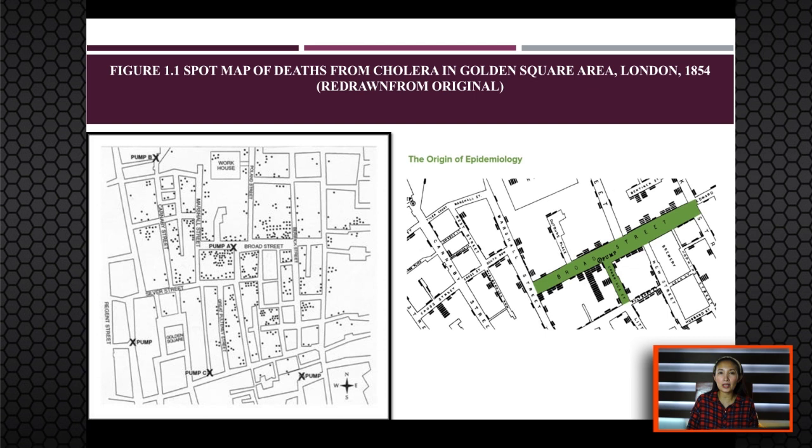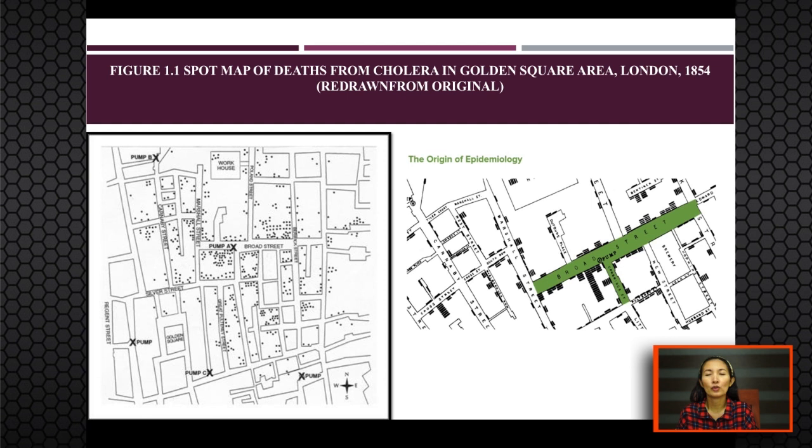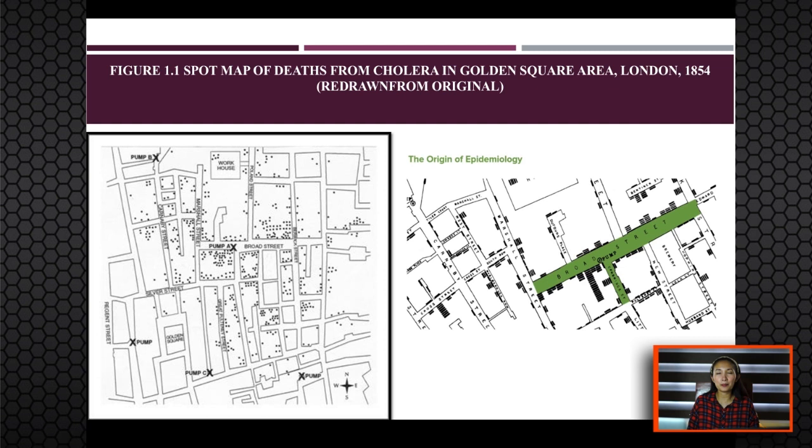When he interviewed people, they said they tried to avoid Pump B because it was greatly contaminated and that Pump C was inconveniently located. So from this, he concluded that Pump A was the source of water and was likely the source of infection for people with cholera in the Golden Square area.